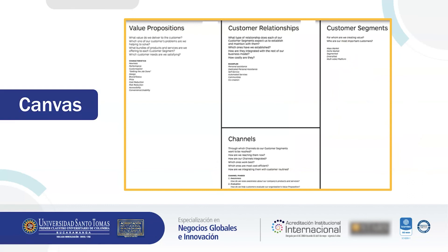The next part of the model contains customer segment, value proposition, customer relationships, and channels. First, customer segment: for whom are you creating value? Which segments are more important? Second, value proposition: identify which is the value given by your company to the customer — what customer problems are you solving? Which of their needs are you fulfilling? Are there different products for each segment? Third, customer relationships: what kind of relationship is each segment expecting? Are those relationships established? How to maintain them?